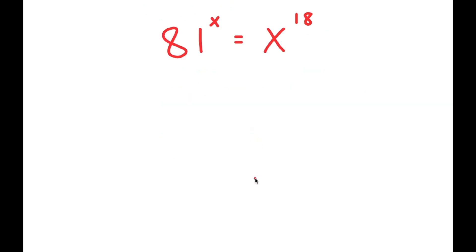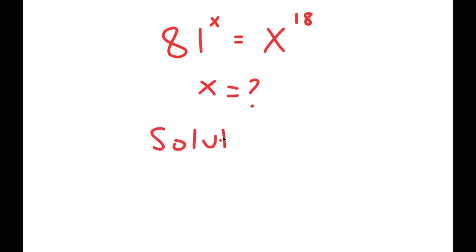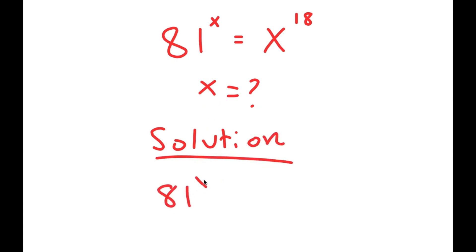In this problem, I have 81 to the power of x is equal to x to the power of 18. I want to find the value of x here. For my solution, I'm going to rewrite this equation: 81 to the power of x is equal to x to the power of 18.